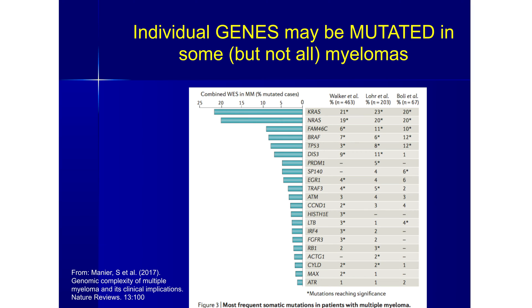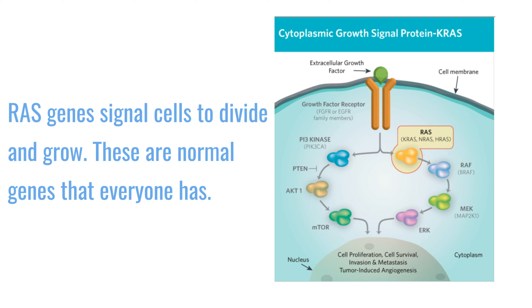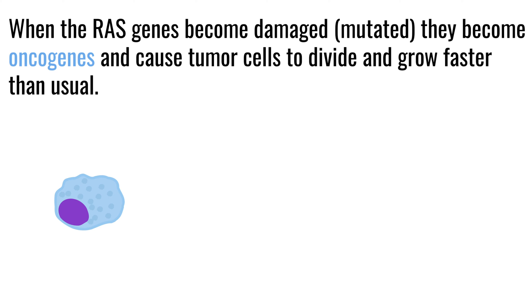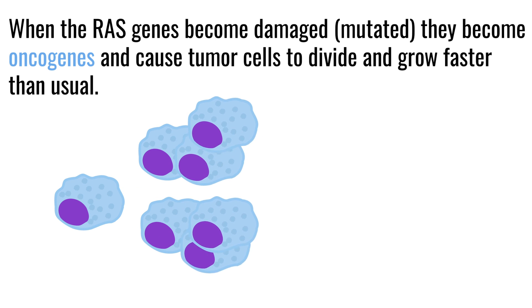A mutation is a single change in a gene that can cause that gene to function differently. KRAS and NRAS are at the top of the list of common mutations. Through research, we now understand that RAS genes signal cells to divide and proliferate. In myeloma, that gene is often mutated so that it functions at a higher level — signaling the cell to divide and proliferate more than it should. That's what tumor cells do, and that's what we don't want them to do.